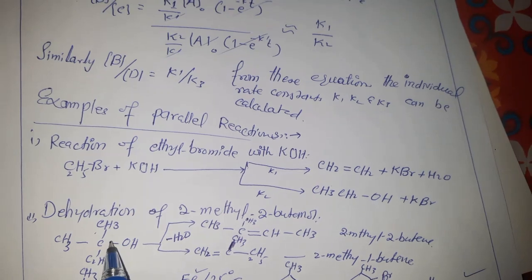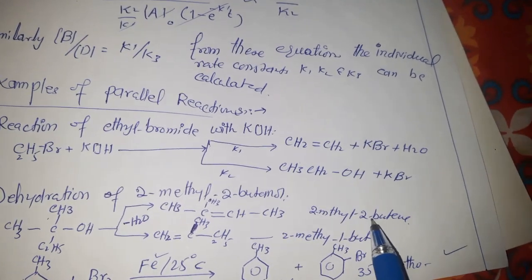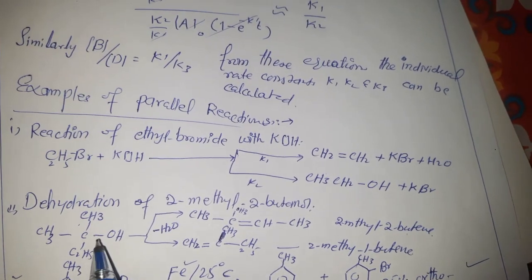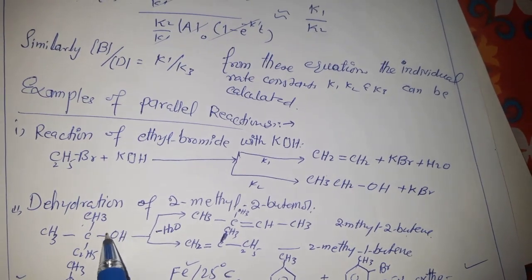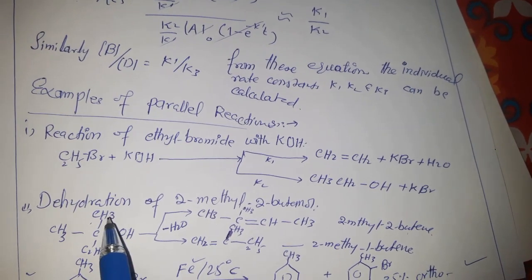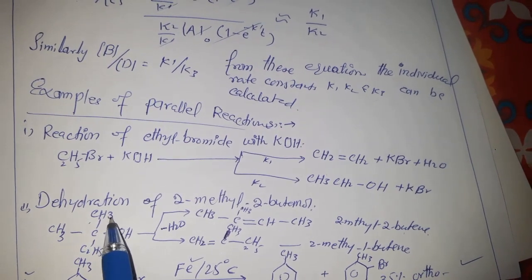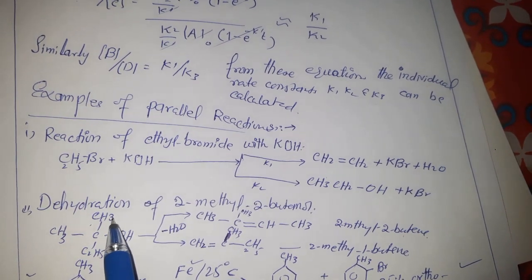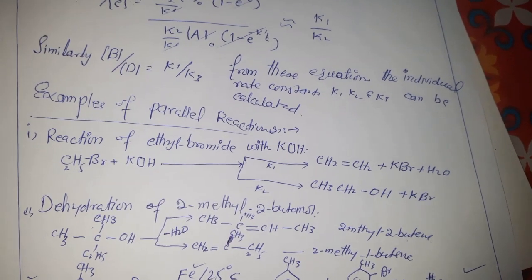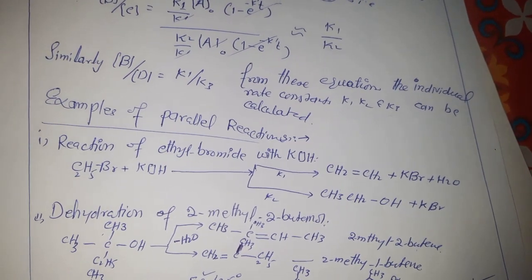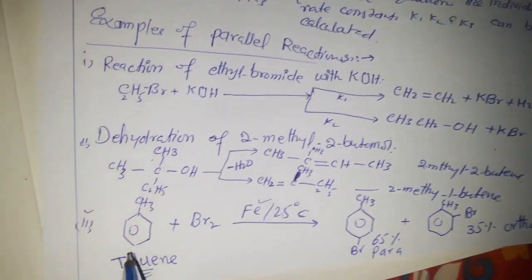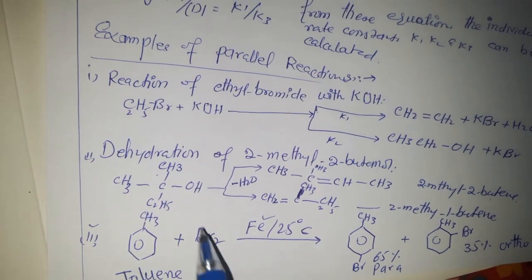In the dehydration of 2-methyl-2-butanol, the hydroxyl group is attached at position 2. The hydroxyl group is eliminated, but the hydrogen can be removed from either position 1 or position 2, so we are getting two different products: 2-butene or 1-butene.